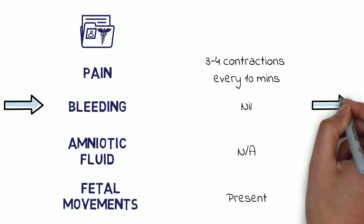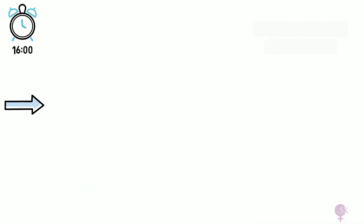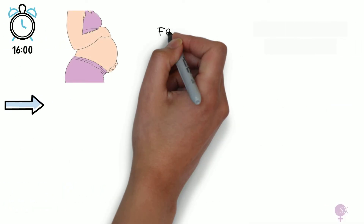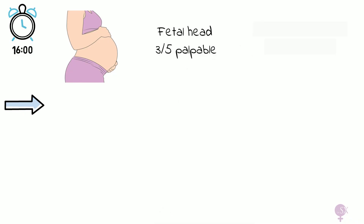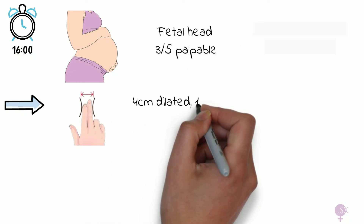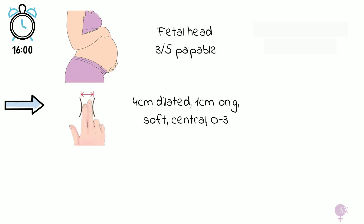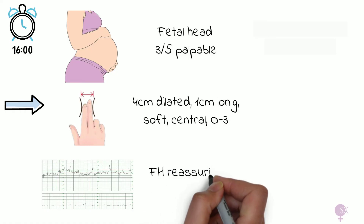On examination, the fetal head is 3 fifths palpable abdominally. Her cervix is 4 cm dilated, 1 cm long, soft, central, with a station of minus 3. The CTG is reassuring, marking 3 contractions in 10 minutes.